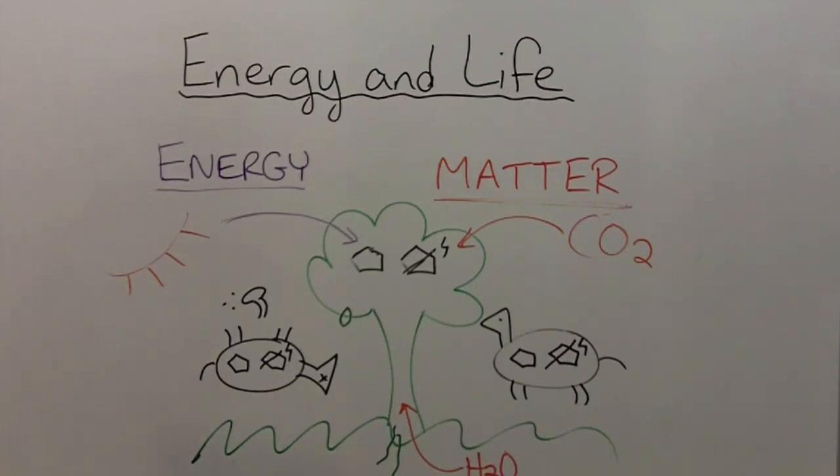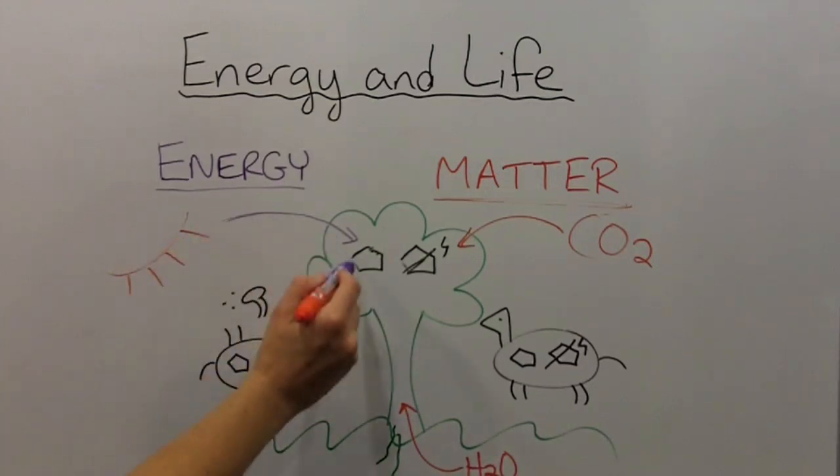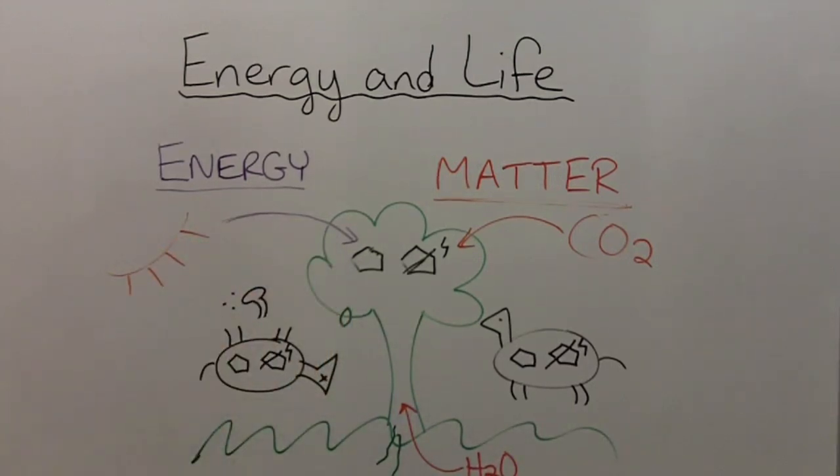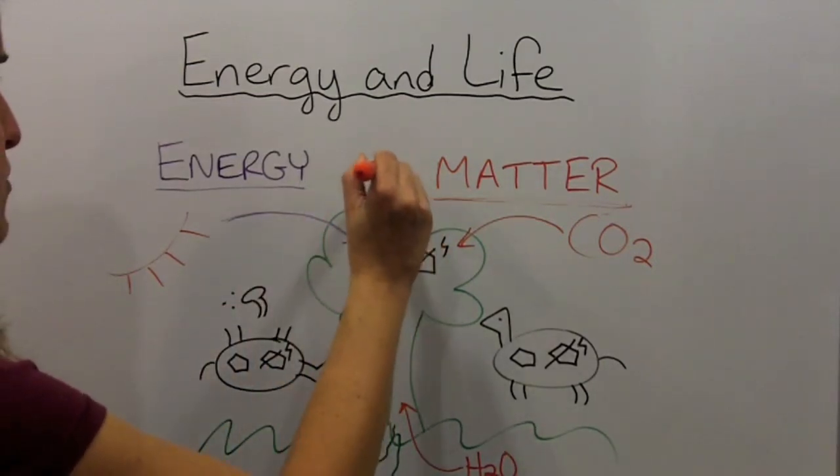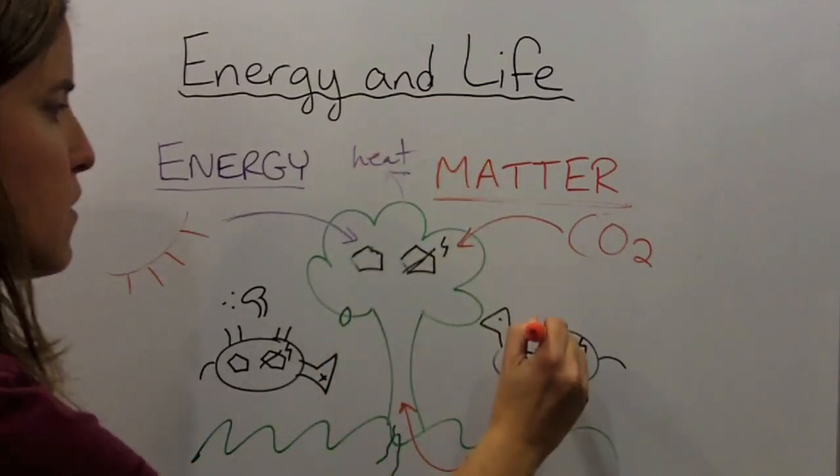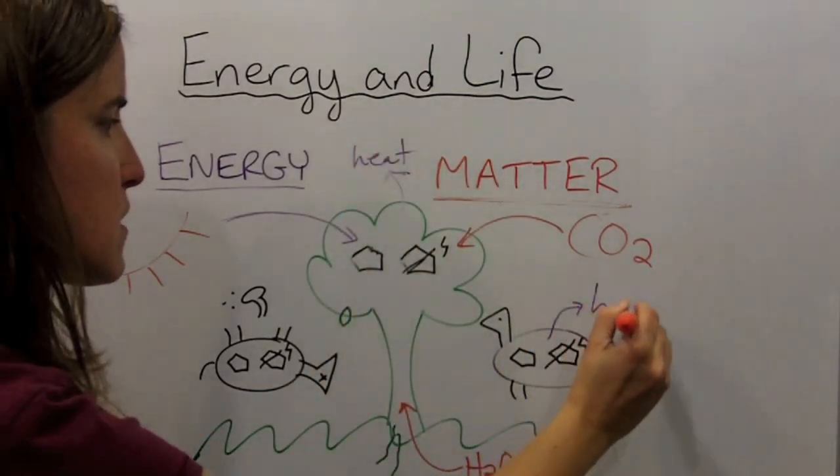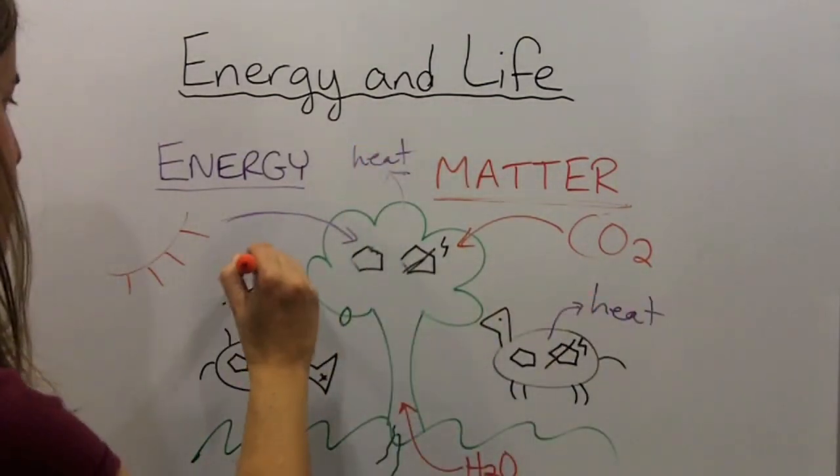One final and very important point. All of these processes are inefficient, meaning that the energy is not perfectly transferred from one place to another. For example, much of the energy released from food molecules during respiration is lost as heat. This is true for producers, for consumers, and for decomposers.